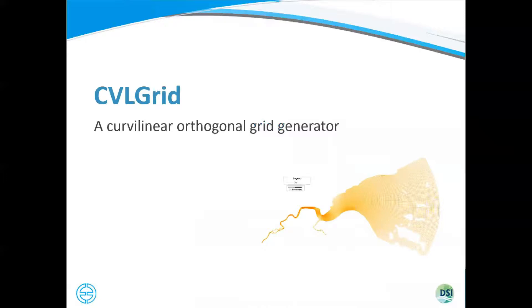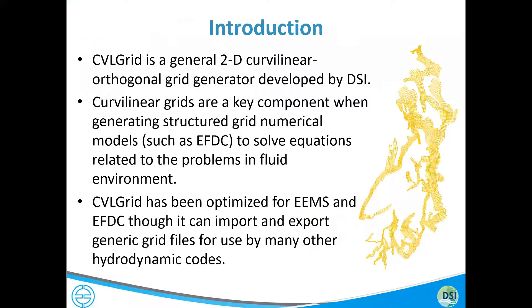Starting with an overview of the curvilinear orthogonal grid generator, which we call CBL Grid. CBL Grid is a two-dimensional horizontal curvilinear orthogonal grid generator that allows for building a broad range of grids that work generally with EFDC. In reality, any structured grid model could likely use the output from CBL Grid, though it is optimized for EFDC.